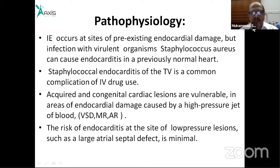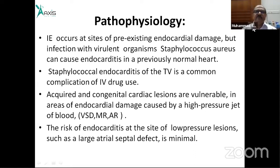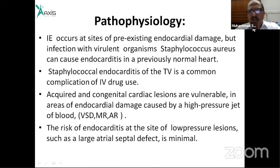In a ventricular septal defect, there is high-pressure communication between the left and right ventricles. Left ventricular pressure is approximately 120 mmHg, while right ventricular and pulmonary artery pressure is around 10 mmHg — creating a large pressure gradient. These high-pressure jets promote bacterial colonization.